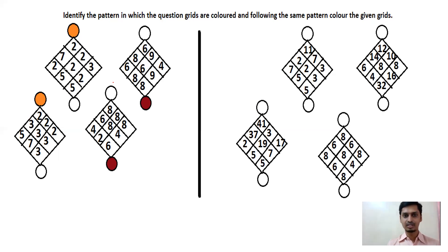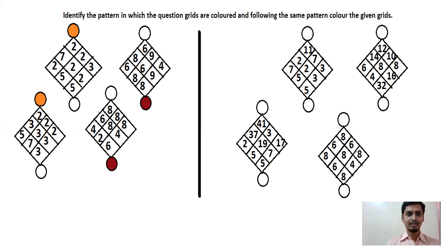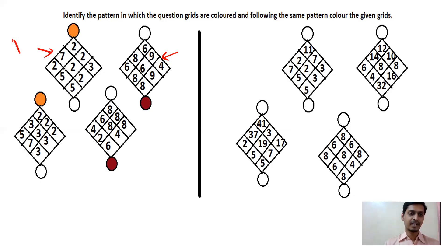If you want, pause the video, think for some seconds, and try to solve it. Here the structure is: the first box contains only prime numbers and the second box has composite numbers. Now look at the first box — it has even numbers as well as odd numbers, and here also you have even as well as odd numbers.